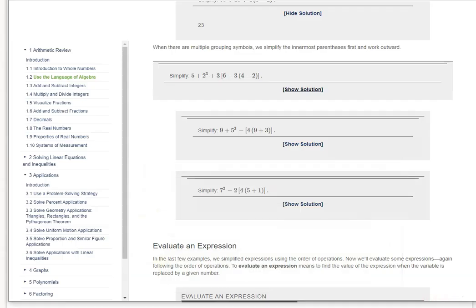You can identify the try it problems in the online textbook by the shorter rectangular border surrounding the problem.